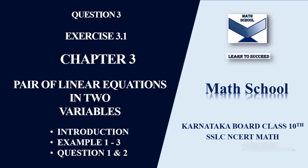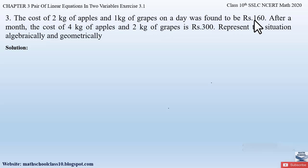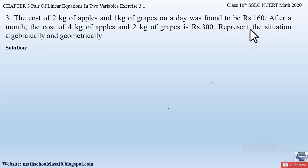So now quickly, let us begin with the video. Question number 3 from exercise 3.1, chapter 3, pair of linear equations in two variables says: the cost of 2 kg of apples and 1 kg of grapes on a day was found to be Rs. 160. After a month, the cost of 4 kg of apples and 2 kg of grapes is Rs. 300. Represent the situation algebraically and graphically.